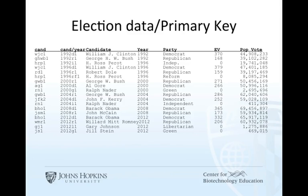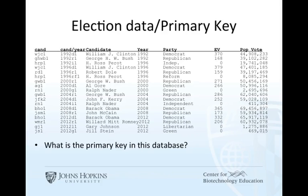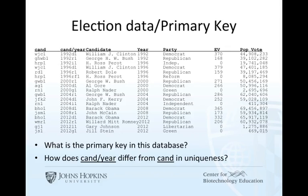Here is some data from United States Presidential Elections. There are seven columns. 'Cand' is an identifier for a presidential candidate. 'Cand/year' is an identifier for a candidate in a particular election. 'Candidate' is the name of a candidate — that's data, not an identifier. 'Year' is also data. 'Party' represents data — which party was that candidate affiliated with? 'EV' stands for electoral votes; the candidate with 270 or more is the winner. 'POP vote' stands for popular votes, which does not decide elections. The first question: what is the primary key? Only two columns are identifiers: 'cand' and 'cand/year'.